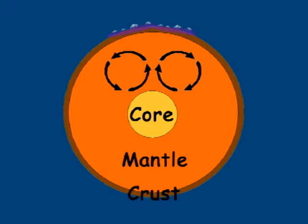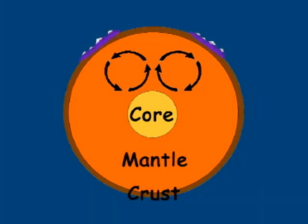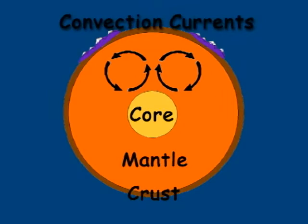This rising and sinking of molten rock creates convection currents. These currents pull the Earth's crust with them as they travel up, over, and back down again. This causes the plates to pull apart and smash together.